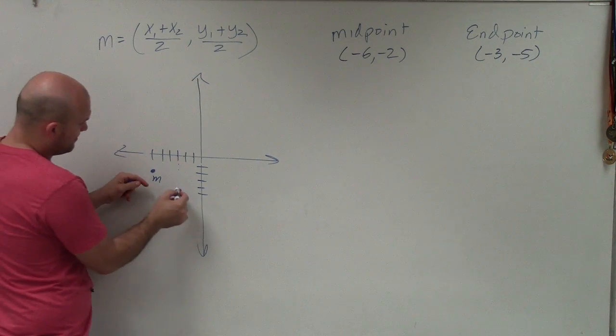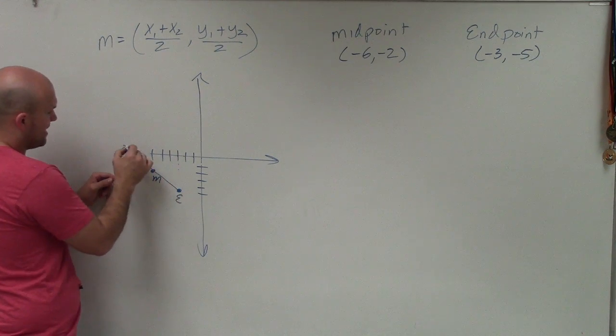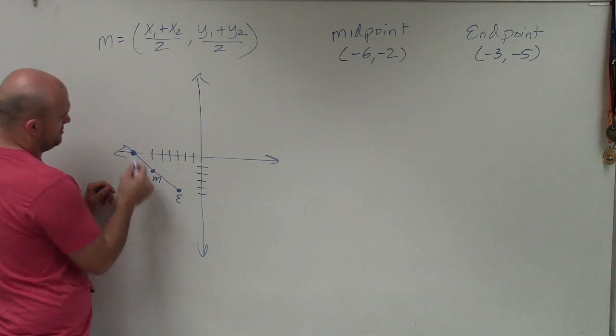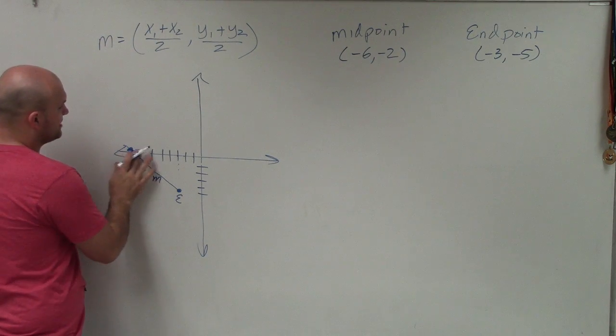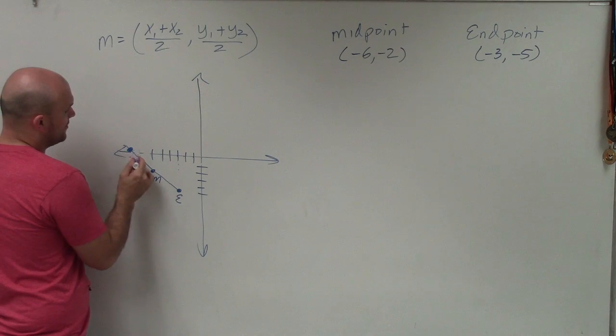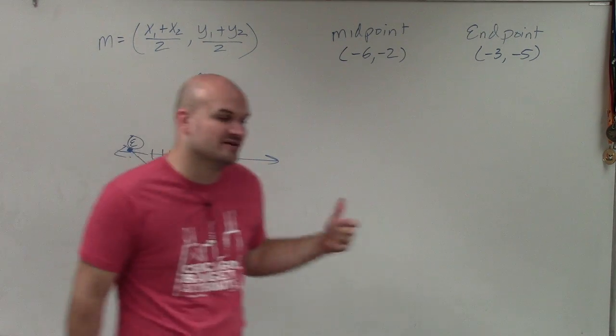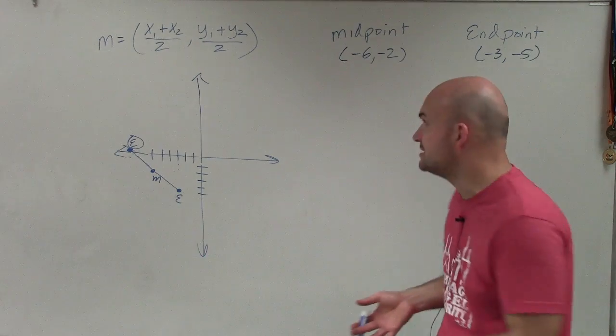So if there's my endpoint and there's my midpoint, I can probably estimate that my new endpoint is probably going to be something over here. But the problem is I don't know what that value is. So that's what we're trying to figure out - we're trying to figure out what the endpoint is.